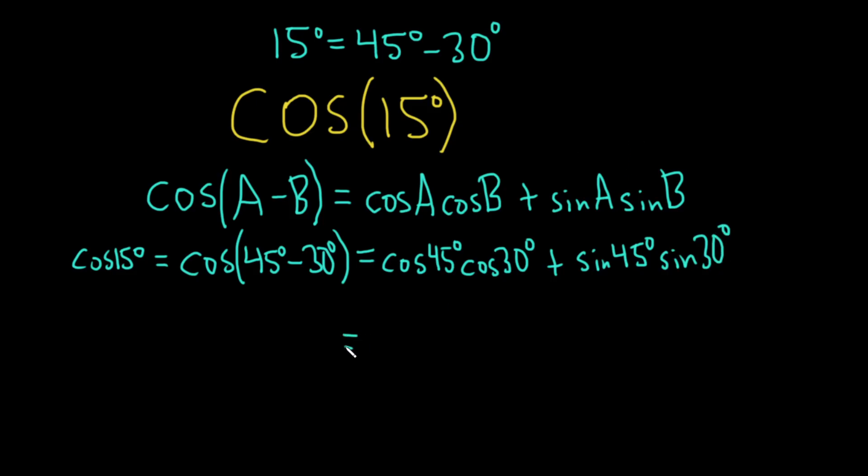So this is equal to, well, the cosine of 45 degrees is one of the easier angles to memorize. This is the square root of 2 over 2. The cosine of 30, if you haven't memorized, you'll know it's the square root of 3 over 2, plus the sine of 45 is the square root of 2 over 2, and the sine of 30 is 1 over 2.